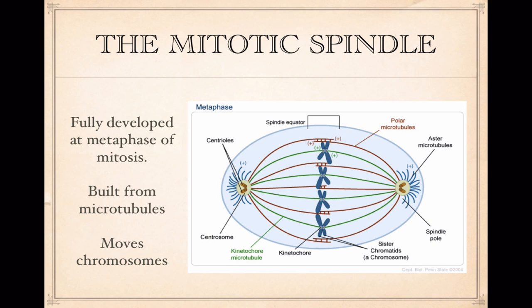In order to move chromosomes around, the cell has to develop something called a mitotic spindle. The mitotic spindle is fully developed in the metaphase part of mitosis, and it's built from microtubules. You might remember microtubules from when we talked about the cytoskeleton. Microtubules are part of the cytoskeleton and they're particularly important in cell division because they're going to be moving chromosomes and chromatids around. There's some key words in here I want you to look at and look them up in the textbook if you're not quite sure what I'm talking about here.